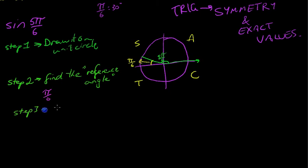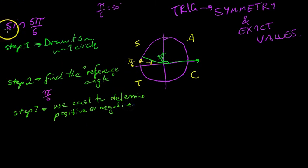Step 3 here. Use CAST to determine positive or negative. So we can see that we're dealing with sine. We want to know sine 5π/6. We're dealing with sine, and we're in here, the second quadrant. Now, according to CAST, our cast model here, if it's sine in this quadrant, it's going to be positive. Anything else is going to be negative. So we know that this is going to be positive.